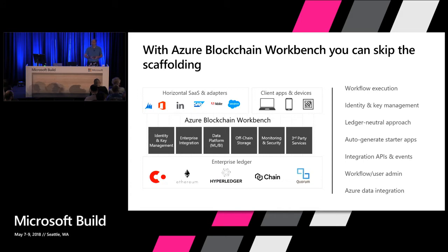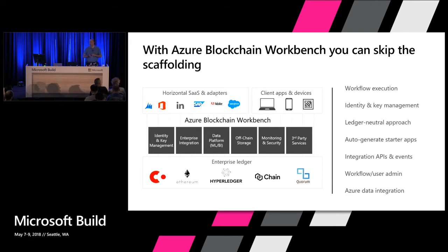Azure Blockchain Workbench lets you run workflows on blockchain across multiple different counterparties with a single view of data. It takes care of your identity using Azure Active Directory, so your users no longer have to manage wallets. You can just log in with single sign-on with your corporate credentials. Your keys are managed for you in Key Vault and signing is already taken care of. The architecture is ledger-neutral — today it works with Ethereum, but we have a private version that works with Hyperledger that we'll be releasing, and we're working on Corda now. You'll be able to use multiple different ledgers with the same architecture and the same API surface area.